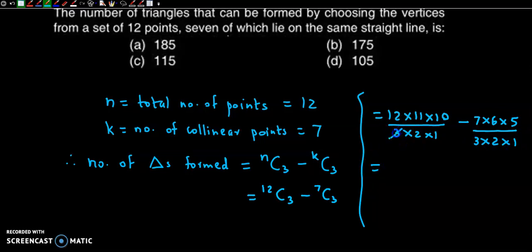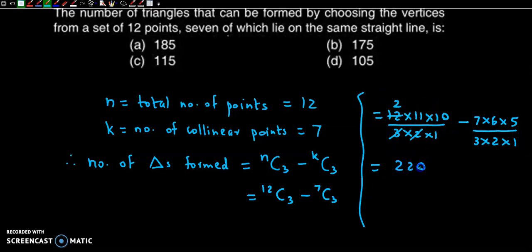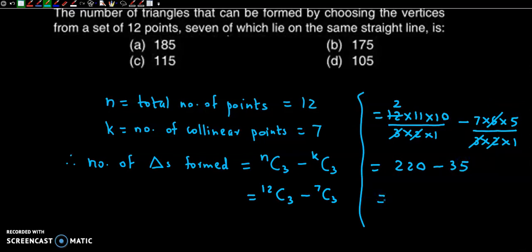Simplifying: 3 × 2 = 6, and 12 × 11 × 10 divided by 6 gives 22 × 10 = 220. For 7C3: 6 cancels, giving 7 × 5 = 35. So we perform the subtraction: 220 minus 35.